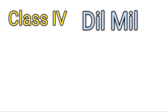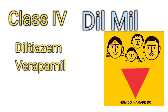Now we will discuss the 'Dill Mill' drug — Class 4 group of drugs. If two Dill Mates then it produces Class 4 group of drugs. DILL means Diltiazem and MIL means Verapamil. When two Dill mates come together — two plus two equals four — so Class 4 group of drugs are like Dill Mill: Diltiazem and Verapamil.